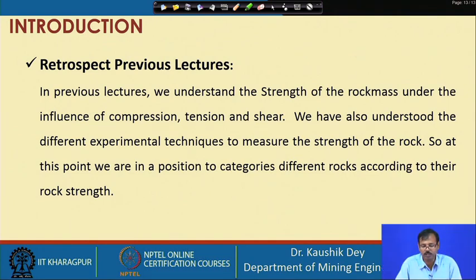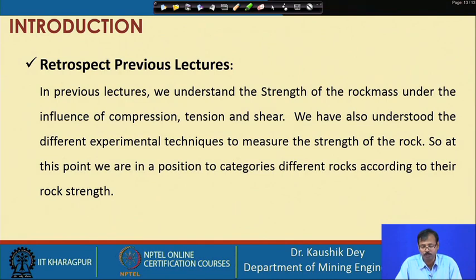At this point we are in a position to categorize different rocks according to rock strength — it may be soft rock, it may be hard rock, it may be medium hard rock. From there, let us now see the other influencing parameters of the rock properties.